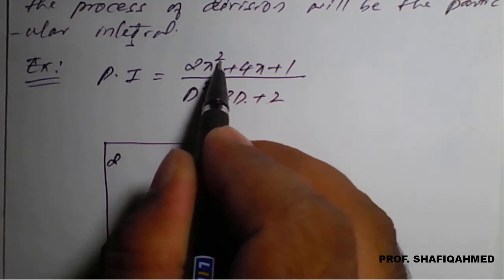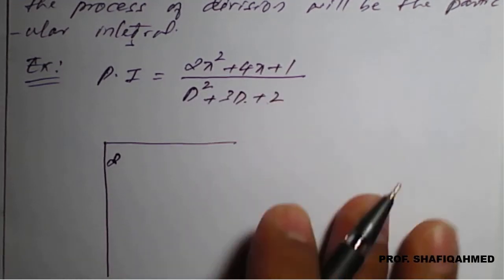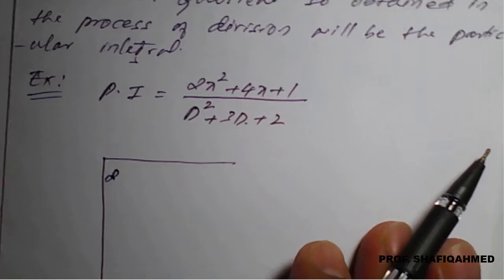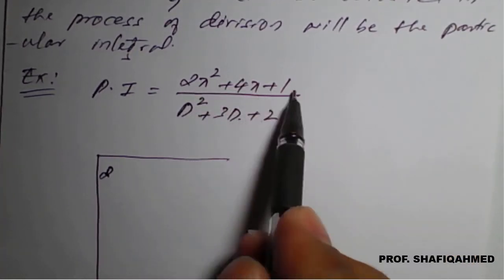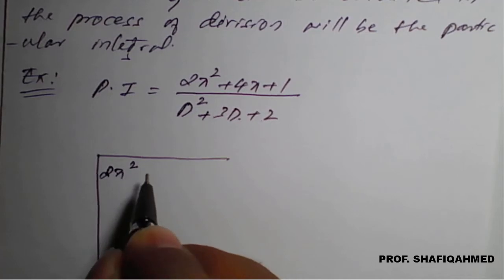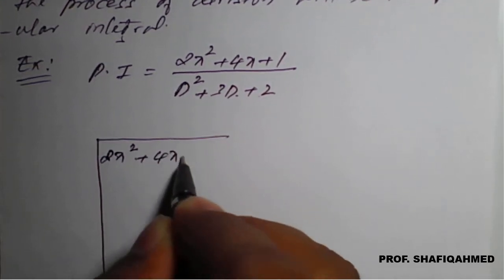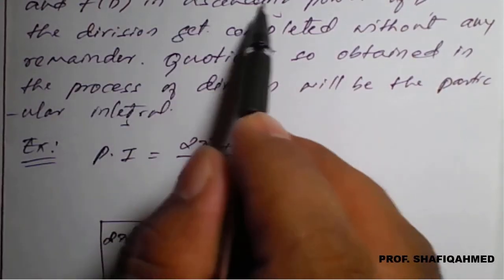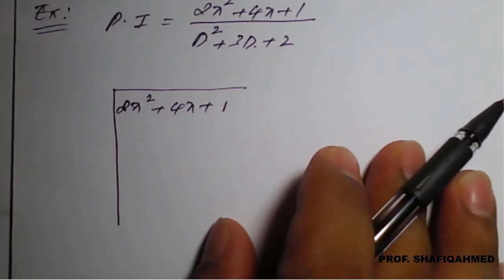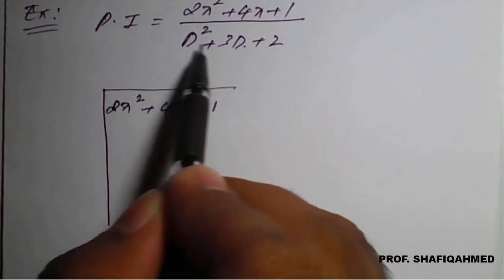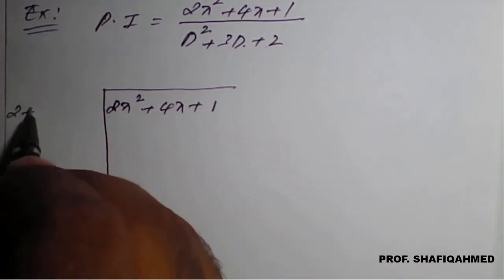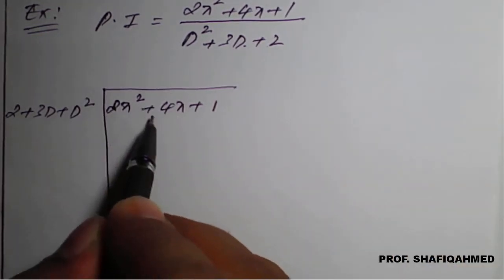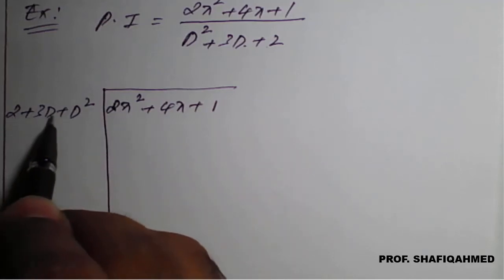We have φ(x) as 2x² + 4x + 1 written in descending power of x — highest to lowest: 2x², then 4x, then 1. And f(D) in ascending power of D — lowest to highest: 2, then 3D, then D². So we write 2 + 3D + D². Now we perform the division: (2x² + 4x + 1) divided by (2 + 3D + D²).